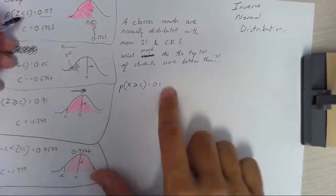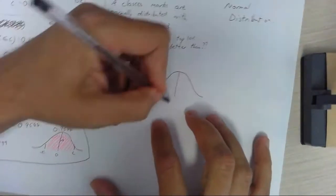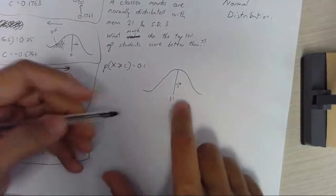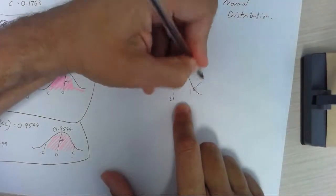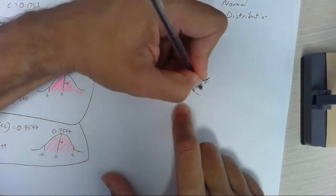So drawing that on a normal distribution we have a normal distribution, a mean of 21 and a standard deviation of 3. And we're looking for the top 10 percent of students which is 0.1. Let's put 0.1 in there.